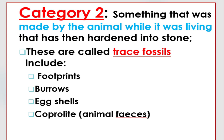The second category, category 2, includes something that was made by the animal while it was living that has been hardened into stone — these are called trace fossils. Trace fossils include footprints, burrows, eggshells, and coprolites that the animal left while it was alive.